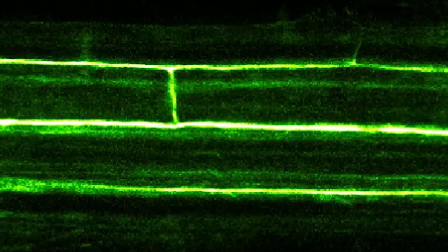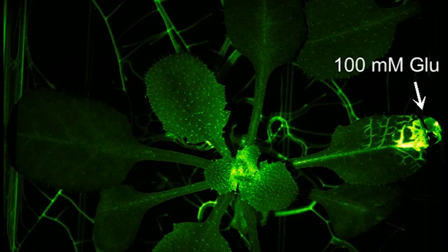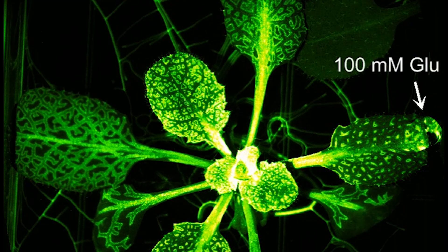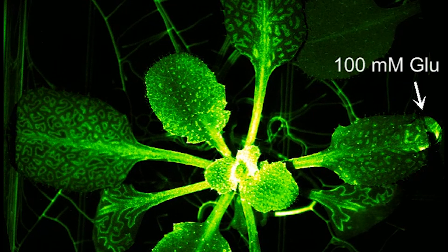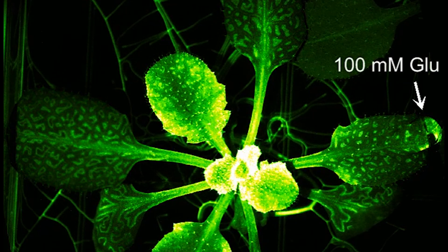The signal travels the green highway of the plant's vascular system in just one to two minutes, activating defense hormones that prepare distant leaves for an impending invasion.